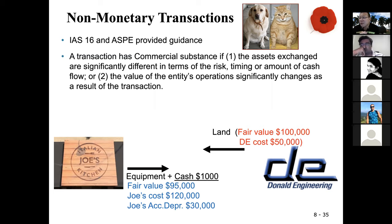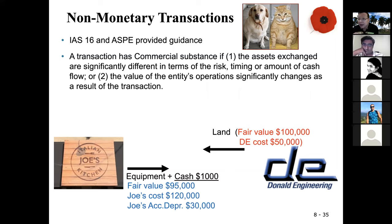The first thing you want to do is make a judgment whether the transaction has commercial substance or not. If you have a piece of land A and exchange it for a piece of land B, maybe there's no commercial substance if the cash configurations remain similar. But for equipment exchanged for land, the cash flows will be different, so this has commercial substance.